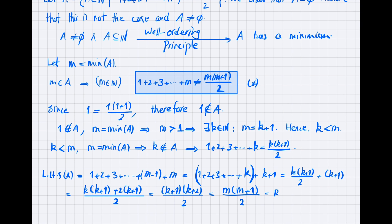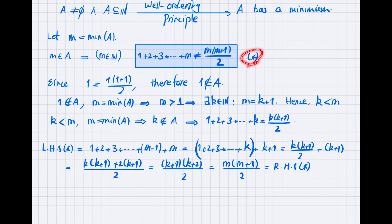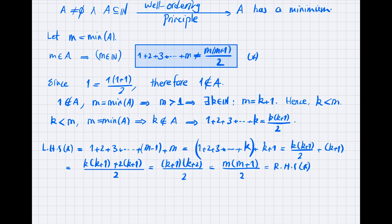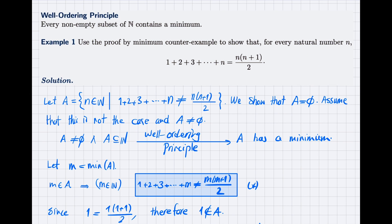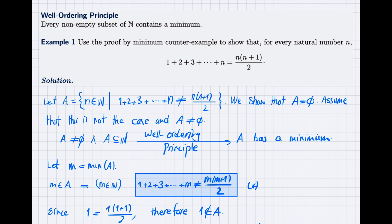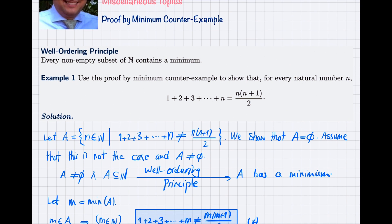That is my contradiction. On the one hand, based on the star, I have to admit that the sum from 1 to m is not equal to m(m+1)/2. On the other hand, I have just shown that this sum is actually equal to m(m+1)/2. This contradiction arises because I assumed A is not empty. So A must be empty, meaning no number violates this equality, and therefore the equality is valid for all natural numbers n. That is the idea behind proof by minimum counterexample.